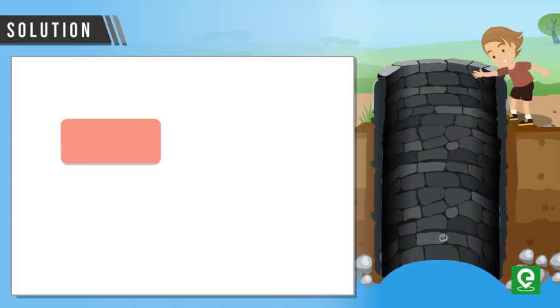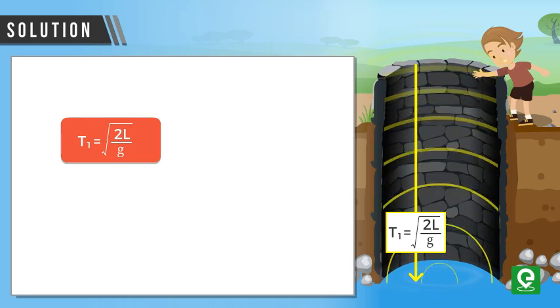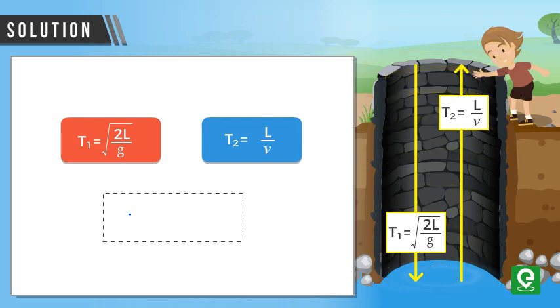Time taken by the stone to reach the water level T1 is equal to square root of 2L divided by g. Time taken to hear the sound of impact with the water in the well T2 is equal to L divided by V.